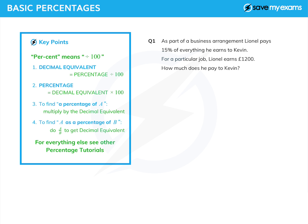You'll often be asked to find a percentage of something, and the easiest way to do that is to multiply by the decimal equivalent. If you're ever asked to find A as a percentage of B, I would just do A over B, which gives you the decimal equivalent, and then you can turn that into a percentage increase or whatever is needed. For percentage increases, decreases, and reverse percentages there are other tutorials, so let's just look at some hopefully very straightforward questions.